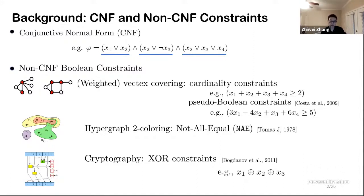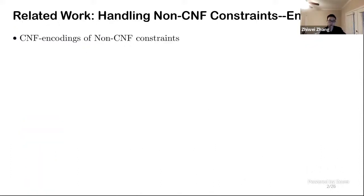So what have people done for handling non-CNF constraints? There are two main lines of research. The first one is encoding. Encodings have been discussed in previous workshops, but here I want to list some limitations of encodings.